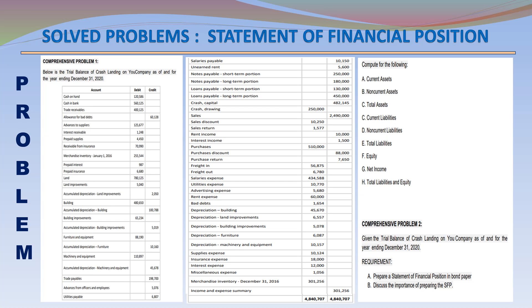Compute the following: A – Current Assets; B – Non-Current Assets; C – Total Assets; D – Current Liabilities; E – Non-Current Liabilities; F – Total Liabilities; G – Equity; H – Net Income; I – Total Liabilities and Equity. Comprehensive Problem 2: Given the trial balance of Crash Landing on U Company as of December 31, 2020 — Requirement A: Prepare a Statement of Financial Position. Requirement B: Discuss the importance of preparing the SFP.